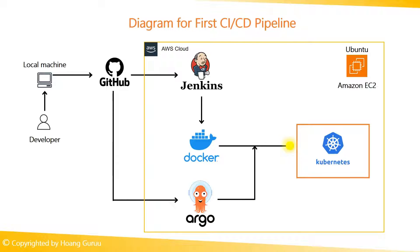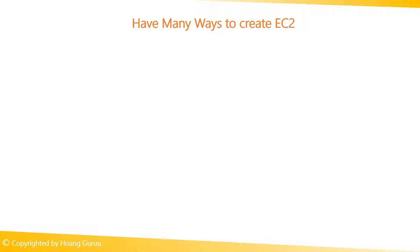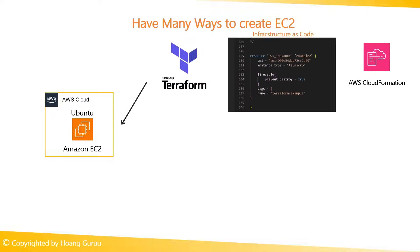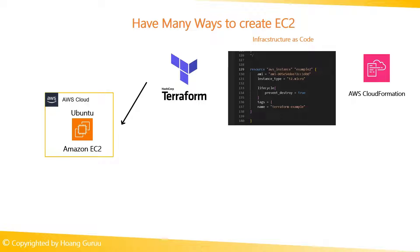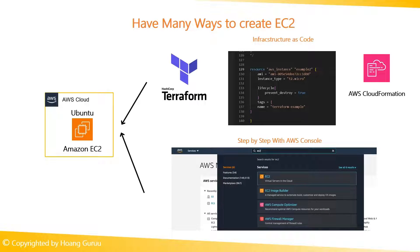We will use an EC2 Ubuntu instance in this project. EC2 provides scalable compute capacity in the cloud — it's like having your own virtual server that you can configure and manage. There are many ways to create EC2, such as infrastructure-as-code tools like Terraform or CloudFormation, or step-by-step with the AWS Management Console. In this video, we will create EC2 using the console.